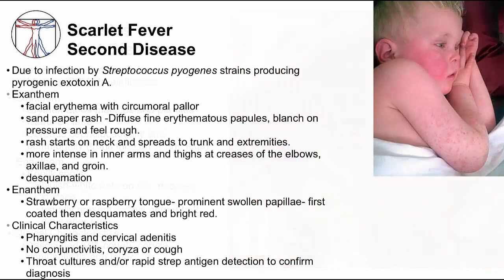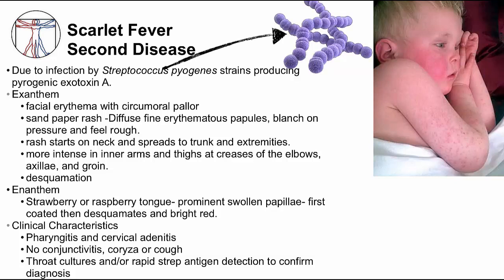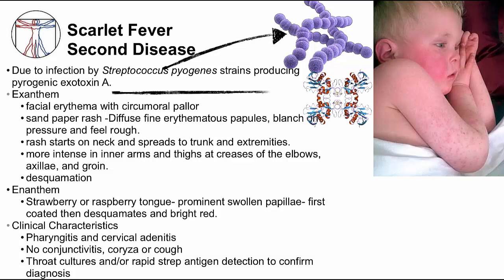Second disease is now more commonly referred to as scarlet fever, caused by Streptococcus pyogenes strains that produce pyrogenic exotoxin A. The exanthem is distinguished by diffuse erythema over the cheeks with pallor around the mouth, called circumoral pallor. On exam, the rash feels like sandpaper — fine erythematous papules that feel rough like goose pimples and blanch with pressure. The rash starts at the neck and spreads to the trunk and extremities, similar to measles, but is accentuated at the inner creases of the elbows, axilla, and groin. As the rash resolves, desquamation occurs.